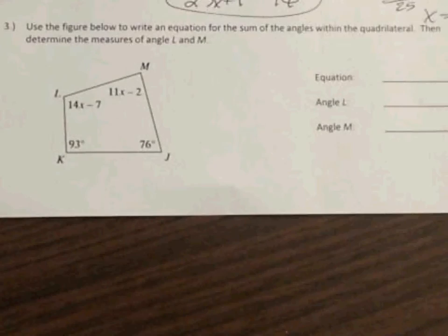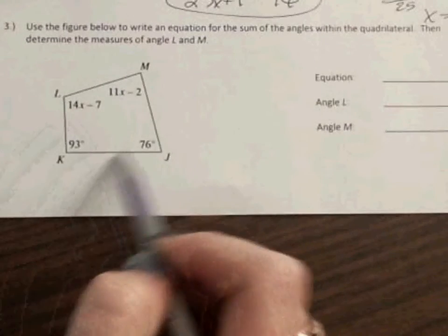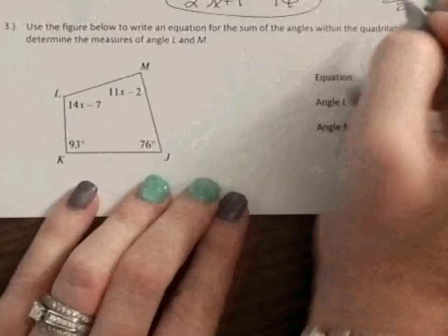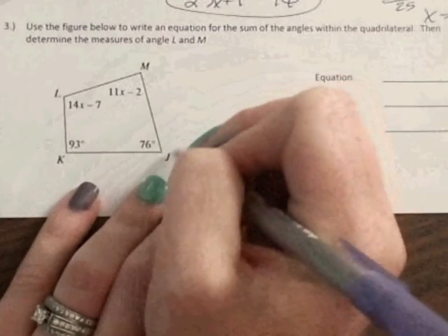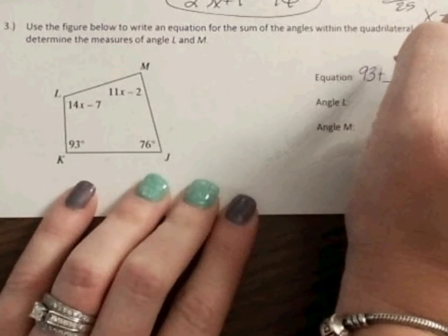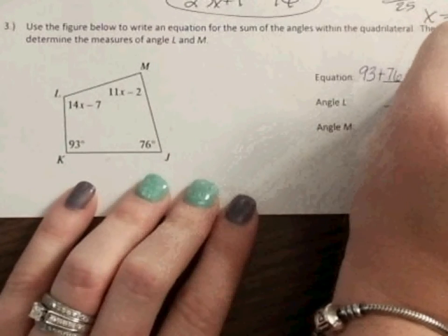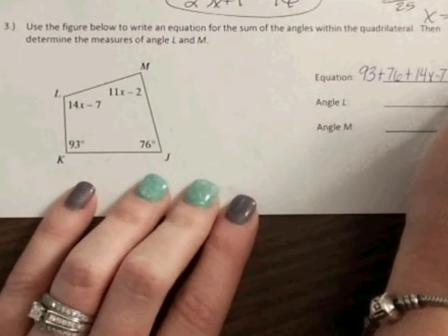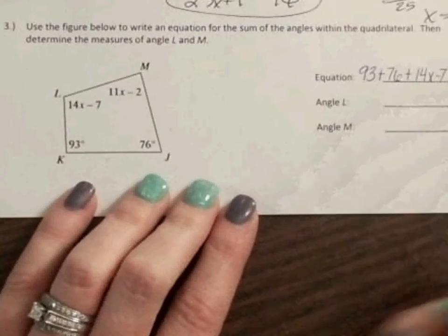So number 3 says, Use the figure below to write an equation for the sum of the angles within the quadrilateral. Then determine the measure of angles L and M. So I know, again, it is a four-sided shape. So my total is going to be 360. So I'm going to just write all these. I'm going to add them all up and they're going to equal 360. So I'm going to have 93 plus 76 plus 14x minus 7 plus 11x minus 2. And all of that equals 360.